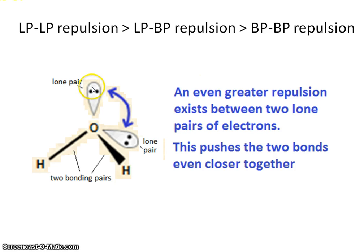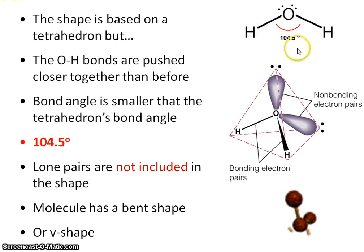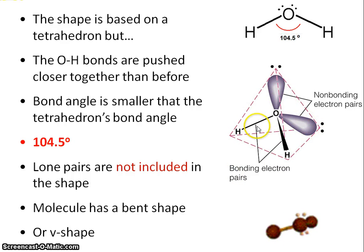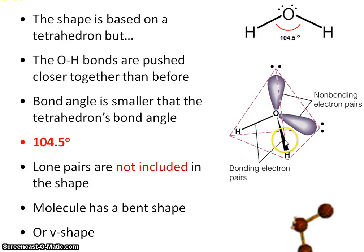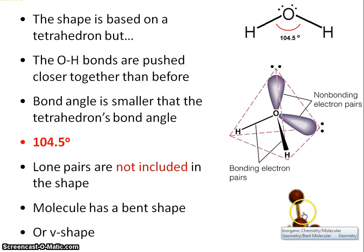With 2 lone pairs, there is significant repulsion between them, bringing the bond angle down from the expected 109.5 degrees right down to 104.5 degrees. Where you've got 2 lone pairs and 2 bonding pairs, instead of the 109.5 degrees you'd expect for 4 groups of electrons, the bond angle is 104.5 degrees. Since the lone pairs are not included in the shape, we have a molecule described as V-shaped or bent.